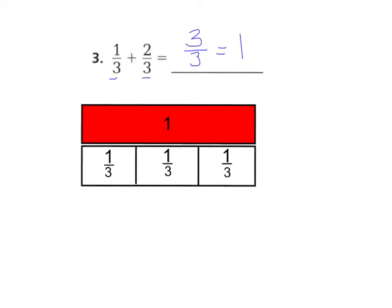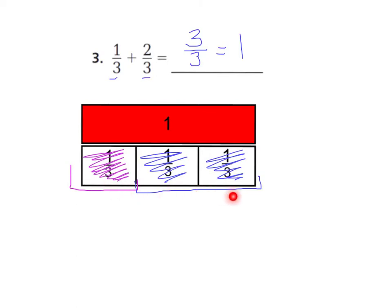And I know that if I use my model now, I can see why it equals 3 thirds. So I know that I have 1 third, and I'm going to shade that pink. There's my 1 third. And then I added 2 thirds. So, let's block off 2 thirds. 1 third and 2 thirds. Well, now I just need to count how many thirds I have. 1 third, 2 thirds, 3 thirds, which is equal to 1 whole.